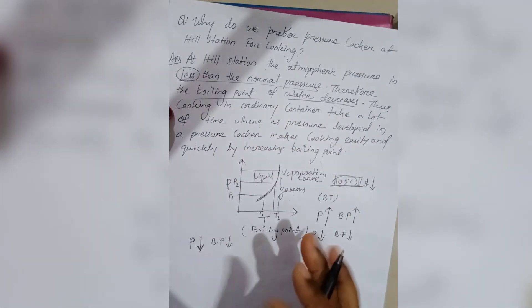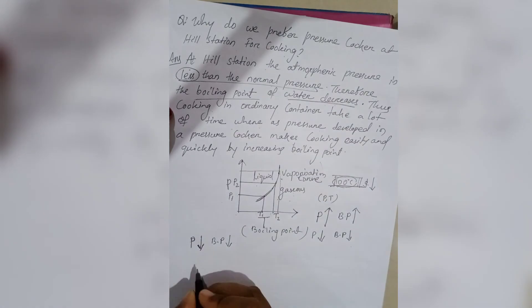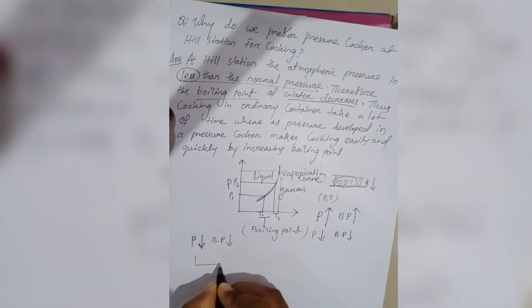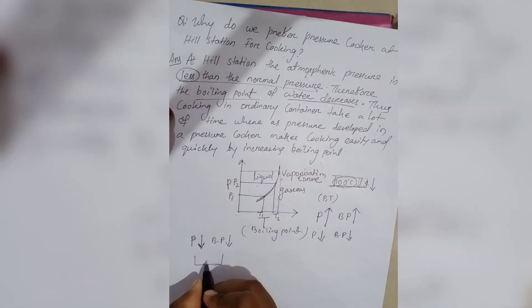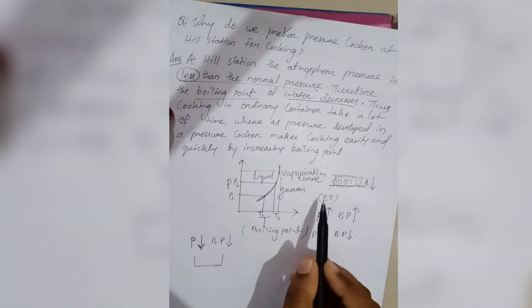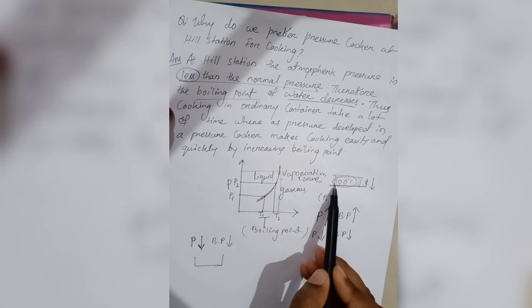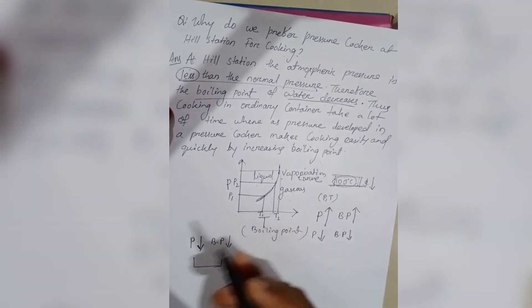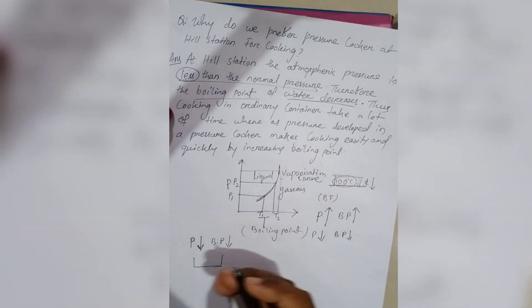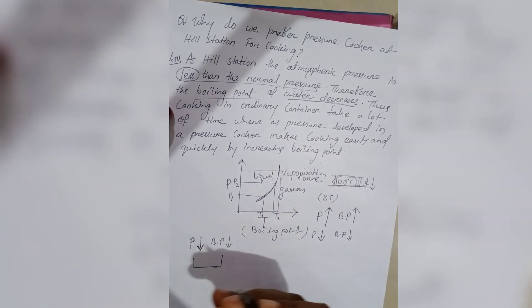Cooking in an ordinary container: if we cook in an ordinary container at a hill station where the boiling point is less than 100 degrees, the water boils at a lower temperature.